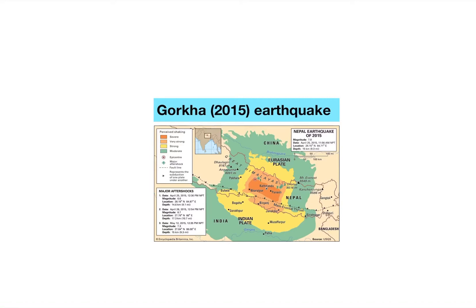Hello everyone. This video will talk to you about the Gorkha earthquake that happened in 2015 in Nepal. This is an example of an earthquake that happened in an LIC, or lower income country. You'll need this one on your exam in section A, natural hazards of paper one. The spec says you have to compare a case study from an LIC to a HIC, so this video will help you with the LIC part and you need to use the video about Tohoku for the HIC part.